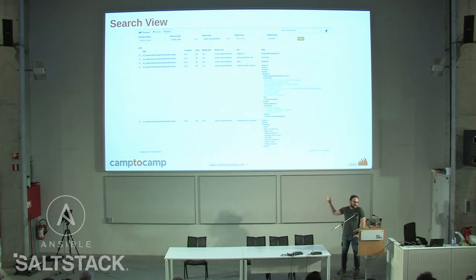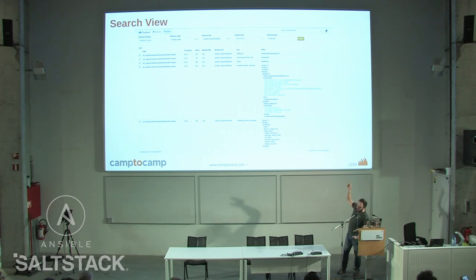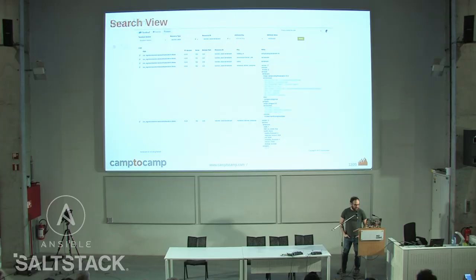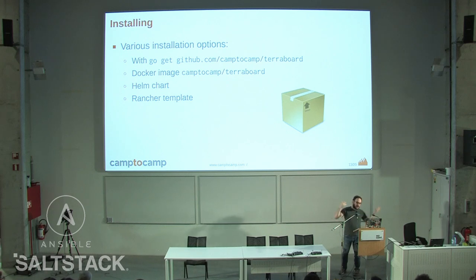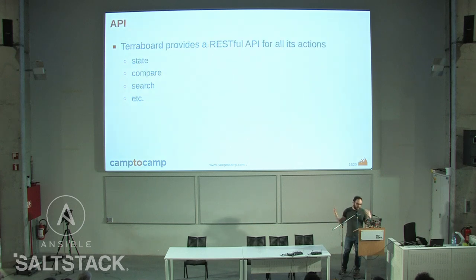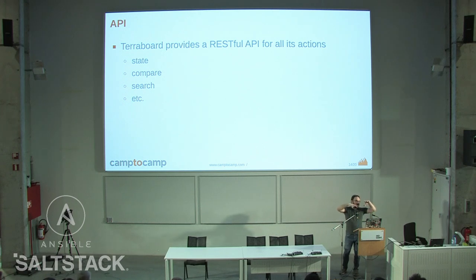There's also a search view. Because we have everything in a database, we can do search — and this is what's really useful. You can search by resource type, resource ID, attribute value, and so on, and find in which projects and which values these different parameters appear. Installing is pretty straightforward: you can install it with go get because it's a Go project, or use the ready-made Docker image. We've been deploying in production originally with Rancher and more recently on OpenShift with Helm. It provides a RESTful API — it's essentially a Go backend with AngularJS on top.